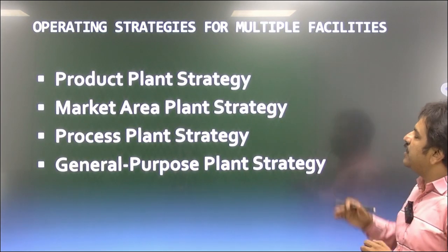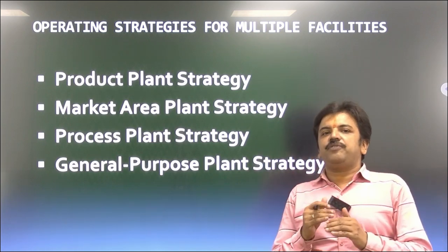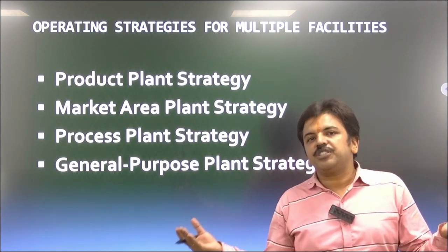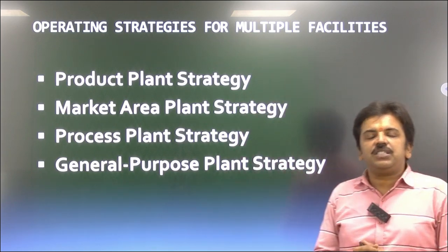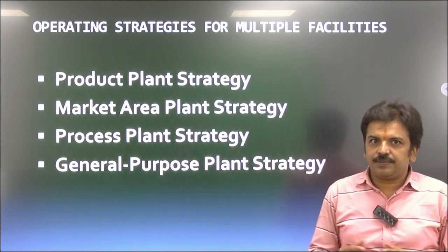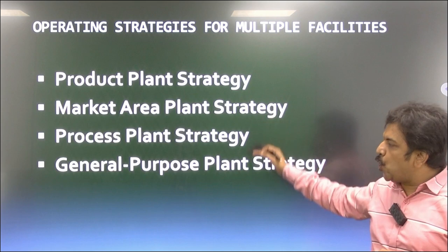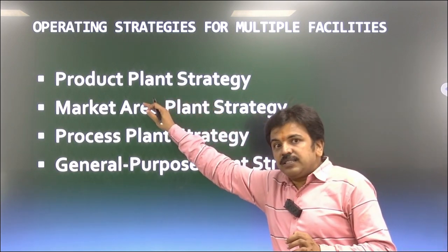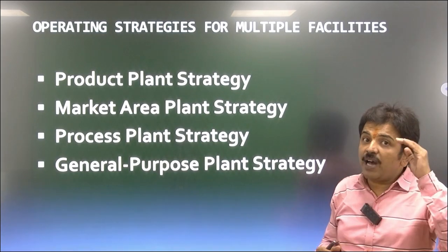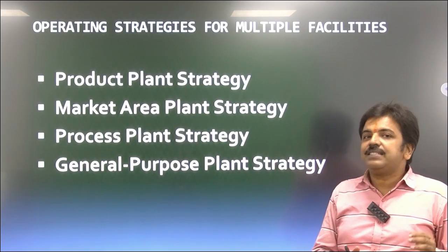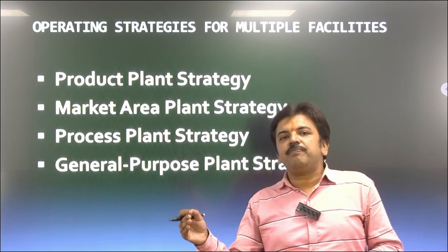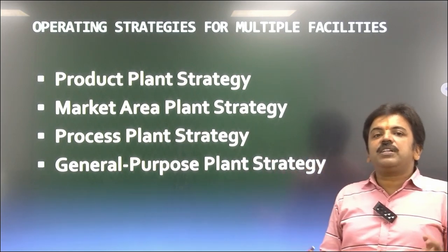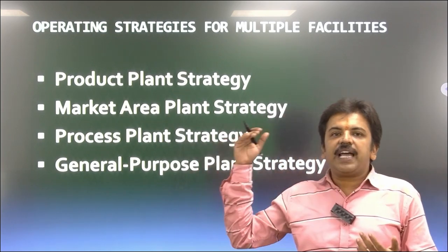Now, operating strategies for multiple facilities. As a production manager, there are four types of strategies as per the books of production management. These four strategies are specialized for specific areas: for the plant or production system, for the market system, for the processing system — meaning moving a product from one plant or machine to another — and a general strategy which is a mix of all three.